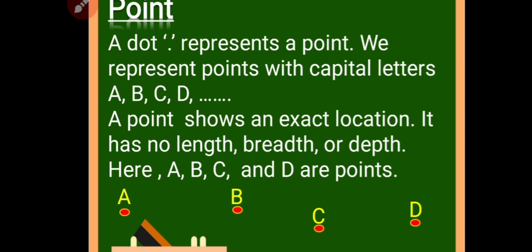We represent points with capital letters — A, B, C, D, or any other letter you want. A point shows an exact location, a particular location, and it has no length, no breadth, and no depth. That means in short, you cannot measure a point.